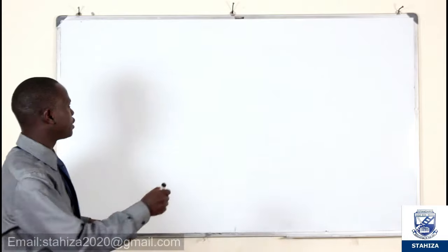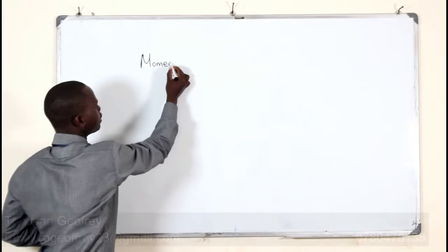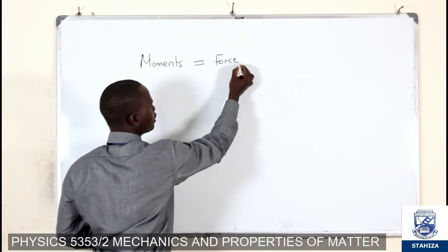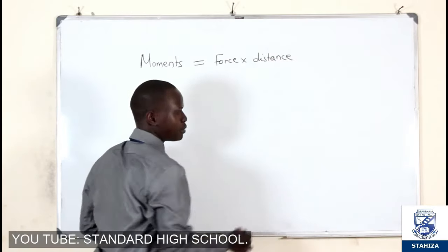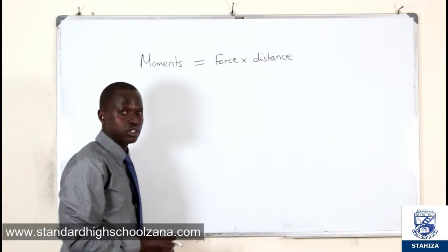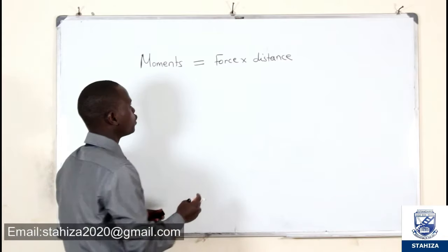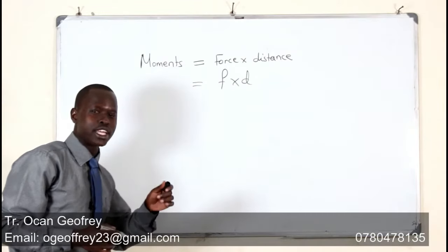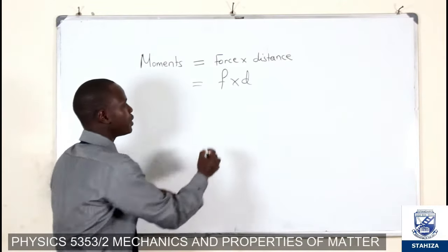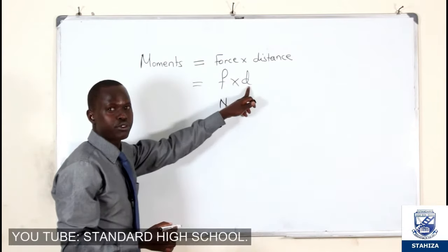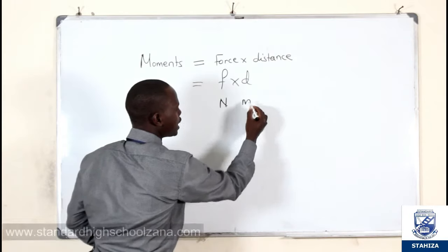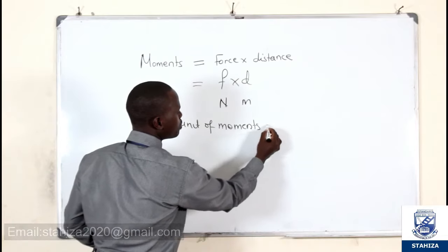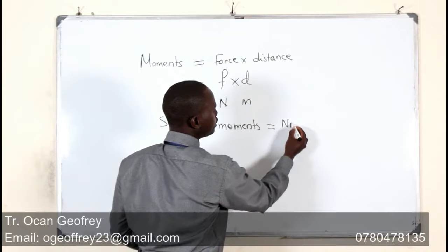We said that moments is equal to the product of the force and the perpendicular distance from the line of action to the pivot. So we say that moment equals F times D. We also established the SI unit of moments: since the SI unit of force is Newton and the SI unit of distance is metre, the SI unit of moment is Newton metre.